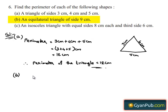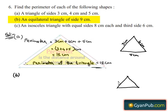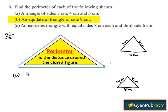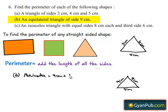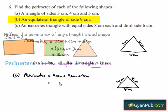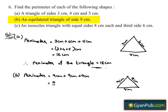Let us consider an equilateral triangle. That implies each side is 9 centimeters. The perimeter is nothing but the sum of the sides. That is, perimeter is equal to 9 centimeters plus 9 centimeters plus 9 centimeters. Since 9 centimeters is added 3 times, instead of adding individually we can write 3 times 9 centimeters.